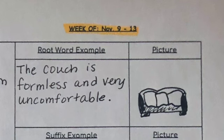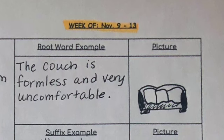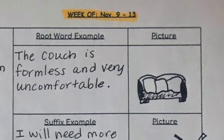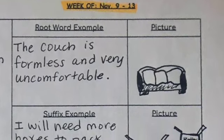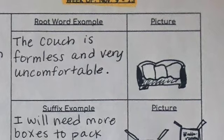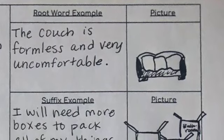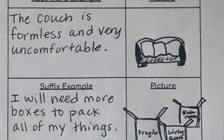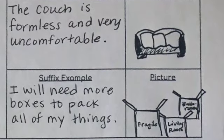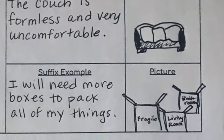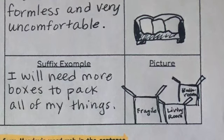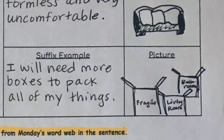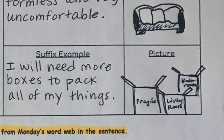Last, you will write your examples. You need to write a sentence for a root word and a sentence for a suffix. I chose to use the word formless for the root word. My sentence is: the couch is formless and very uncomfortable, and I drew a picture of a lumpy couch. The suffix I used is boxes — I wrote: I will need more boxes to pack all of my things, and then I drew some pictures of boxes. You can use my sentences, tweak the sentences, or make up your own. Just make sure that you're spelling the words correctly.